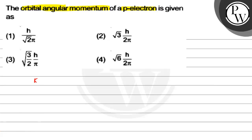Here you want to just use the orbital angular momentum formula which is given by h by 2 pi root under l into l plus 1, so l is the azimuthal quantum number.